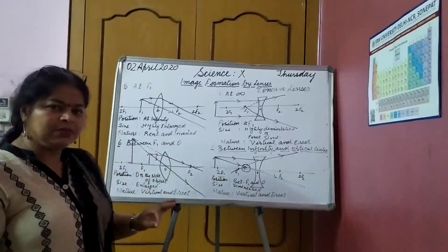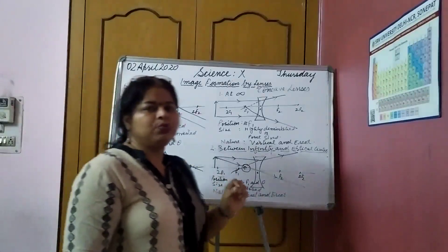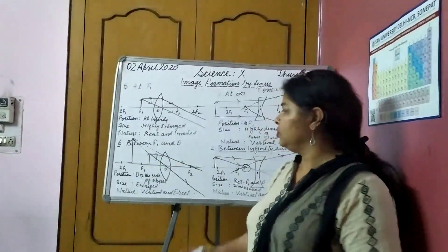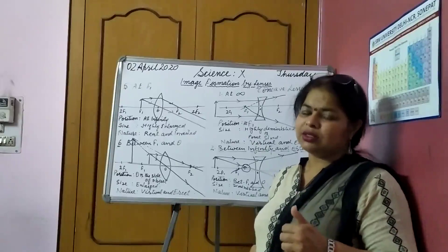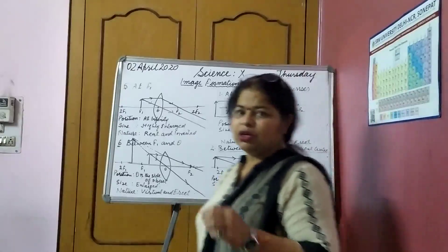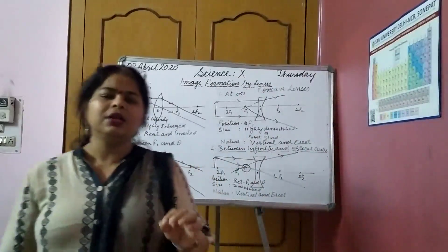So, only two cases: at infinity and between infinity and optical center. So, practice them. So, today's homework is to practice these ray diagrams. All the eight cases. Six cases of convex lens and two cases of concave lens.